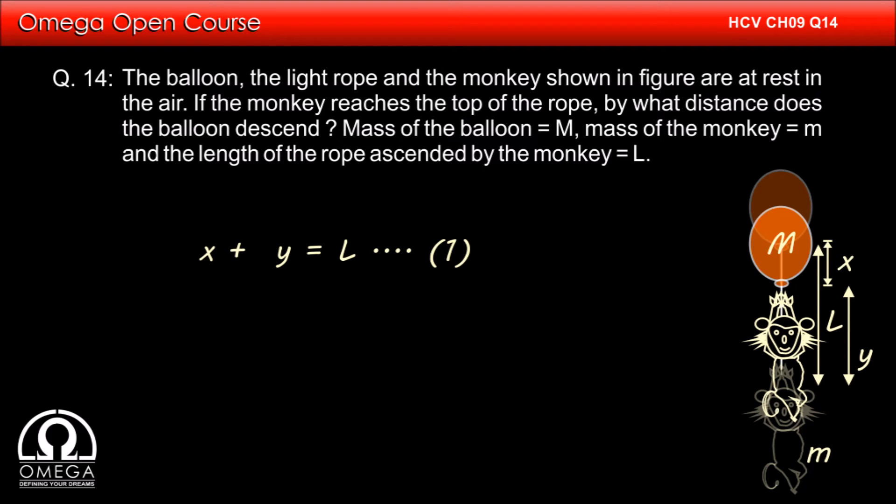We know that if the center of mass of the system is at rest in a two-particle system, the product of the mass into displacement of both particles is always equal.